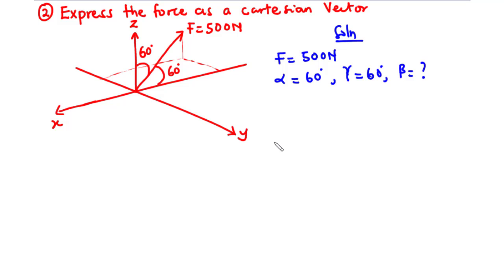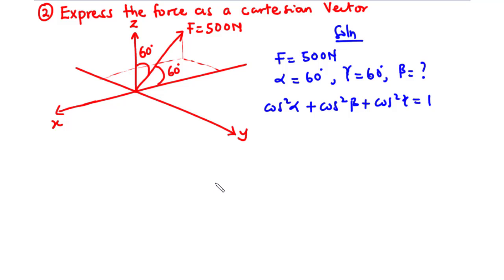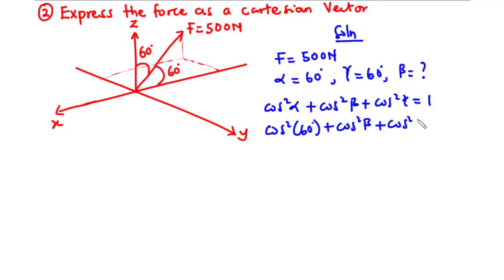When two of the coordinate direction angles are given, we can find the value of the third angle by using the equation: cos²α + cos²β + cos²γ = 1. Now let's substitute the values: cos²60 + cos²β + cos²60 = 1.